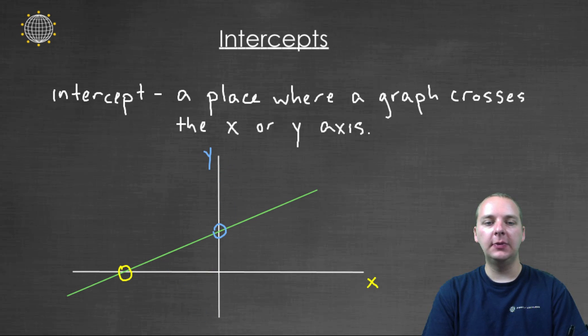And we have specific names for each of these places. Right here where the graph crosses the x-axis, we're going to call this an x-intercept.